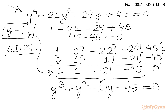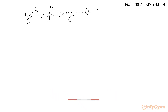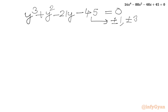Now we will find the eligible factors of 45. The equation is y³ plus y² minus 21y minus 45 equals 0. The eligible factors of 45 are: plus or minus 1, plus or minus 3, plus or minus 5, plus or minus 9, plus or minus 15, plus or minus 45.